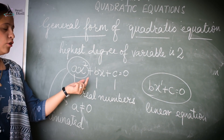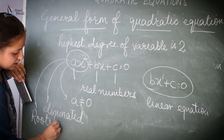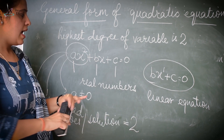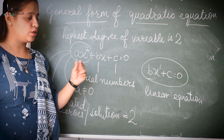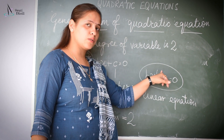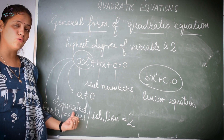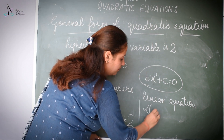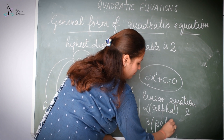Now, to find out the roots of this quadratic equation — roots, zeros, or the solution of quadratic equation — they will be 2. As the highest power of the variable is 2, you can find out 2 solutions of this quadratic equation. In a linear equation the highest degree is 1, so the solution will be only 1. For a quadratic equation there will be 2 roots or zeros, which we call alpha and beta.